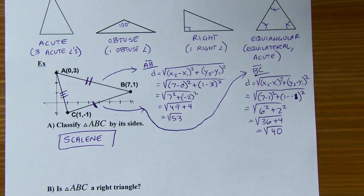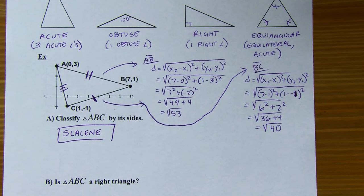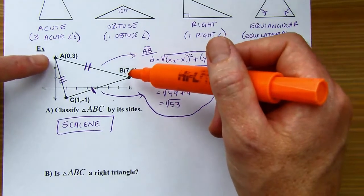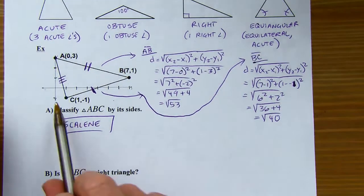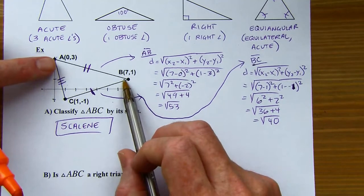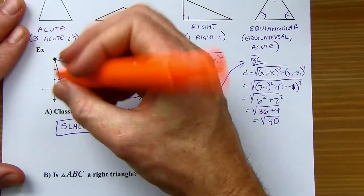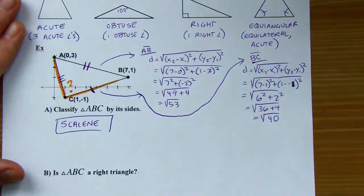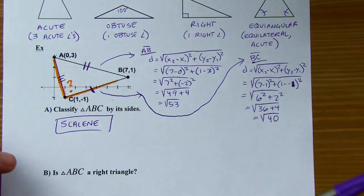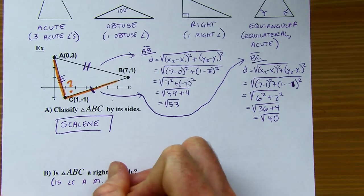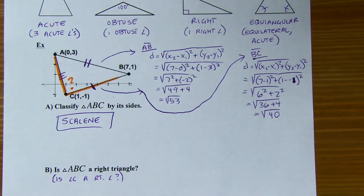We've also got another question: is this a right triangle? If this is a right triangle, my right angle would have to be right here at vertex C — that's the only one that looks like it could possibly be 90 degrees; clearly both of the other angles are acute. So I'm going to test angle C. Is angle C a right angle? If it is, I've got a right triangle.